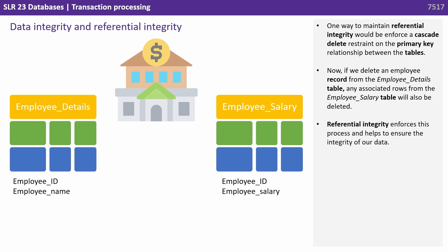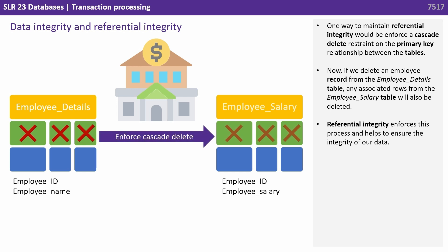One way to maintain referential integrity is to enforce a cascade delete restraint on the primary key relationship between the tables. Now, if we delete an employee record from the employee details table, any associated rows from the employee salary table will also be deleted. Referential integrity enforces this process and helps to ensure the integrity of our database.